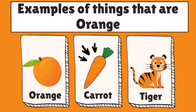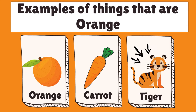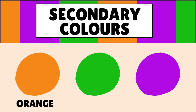Next, we have a carrot. And of course, we have the tiger. Now we have reviewed the first color, which is the color orange. Now let's move on to the next color.